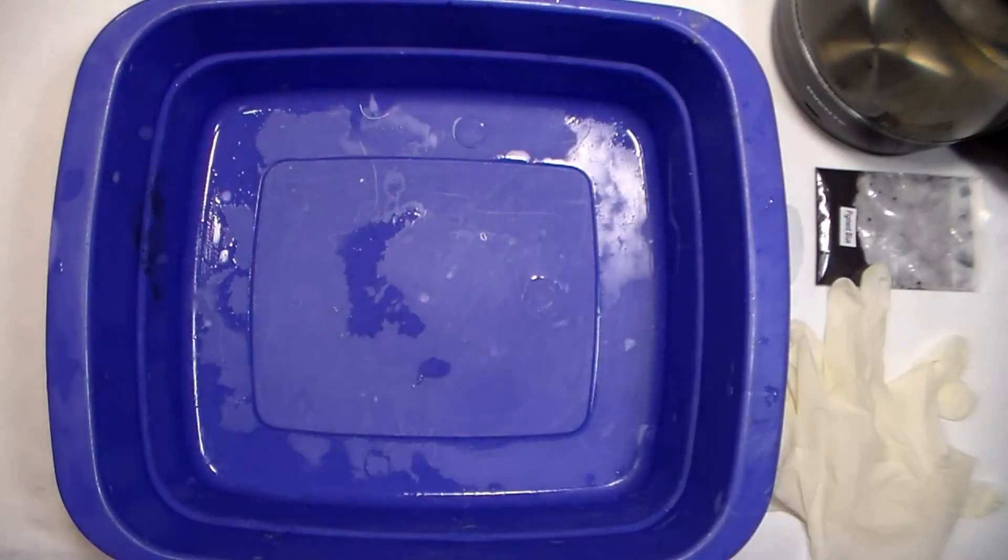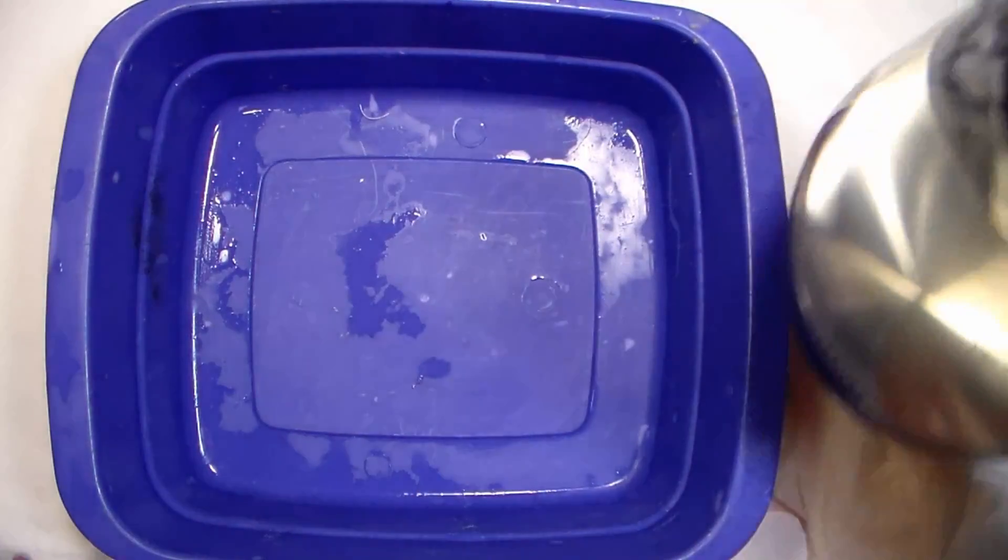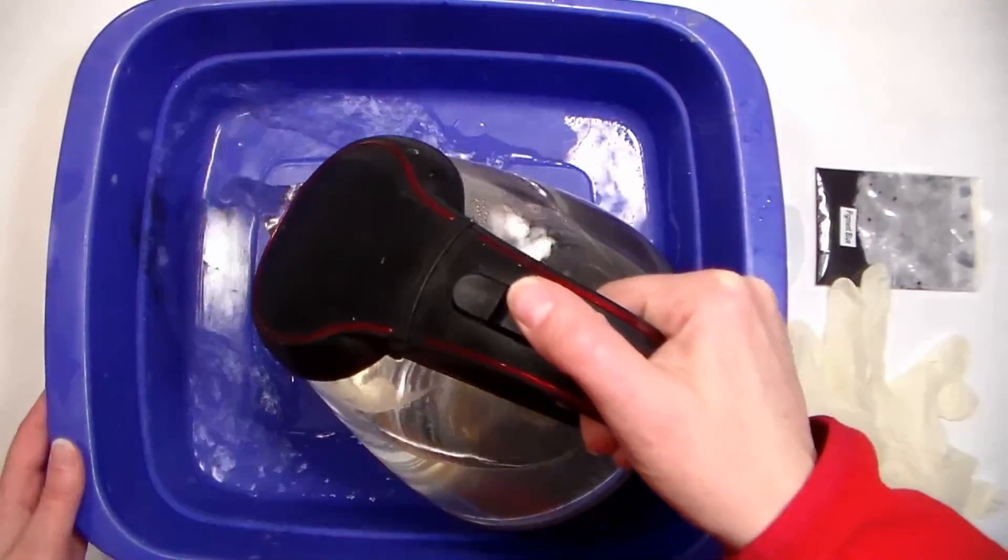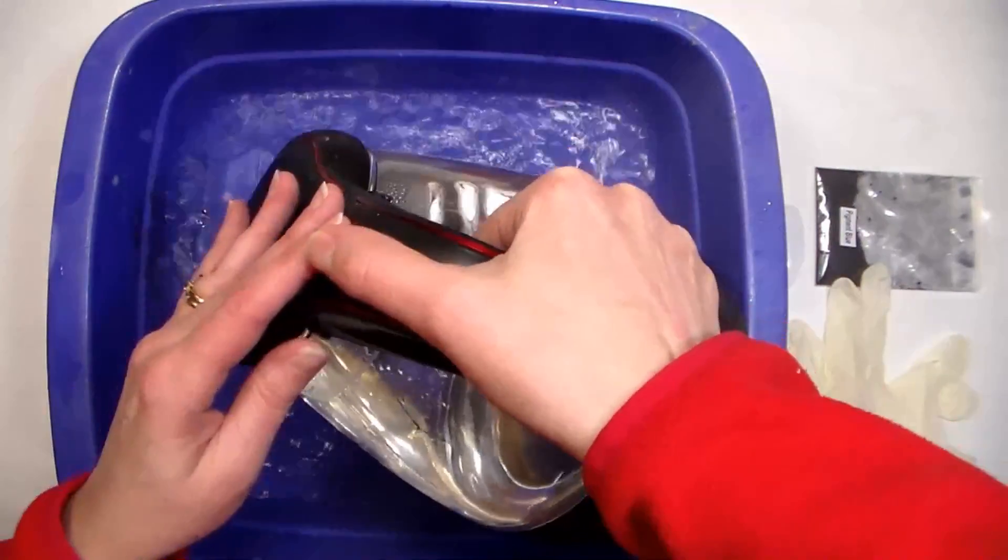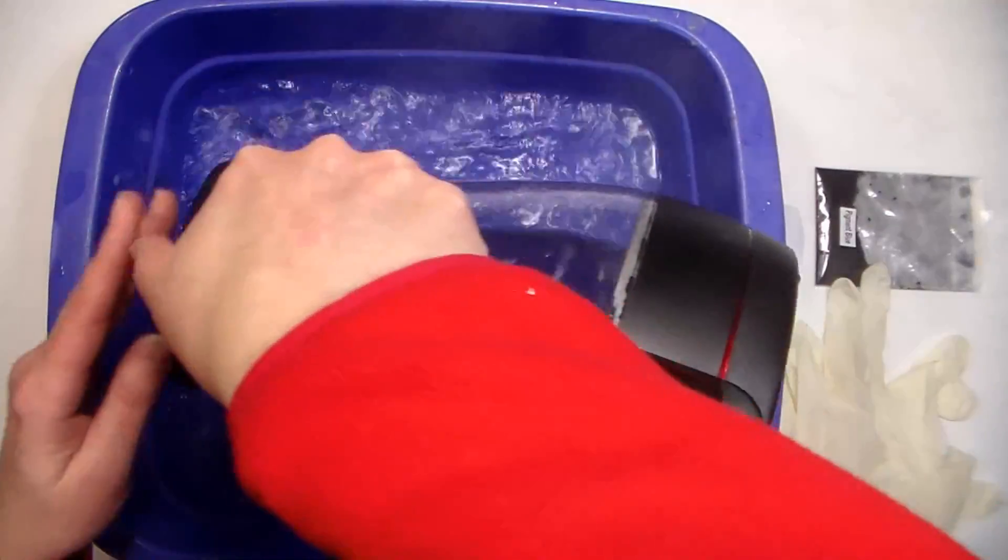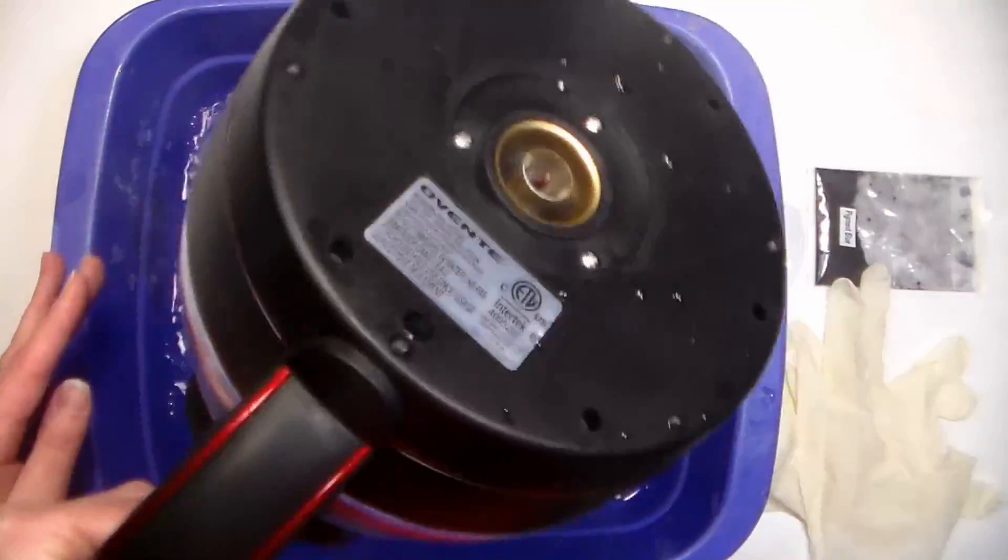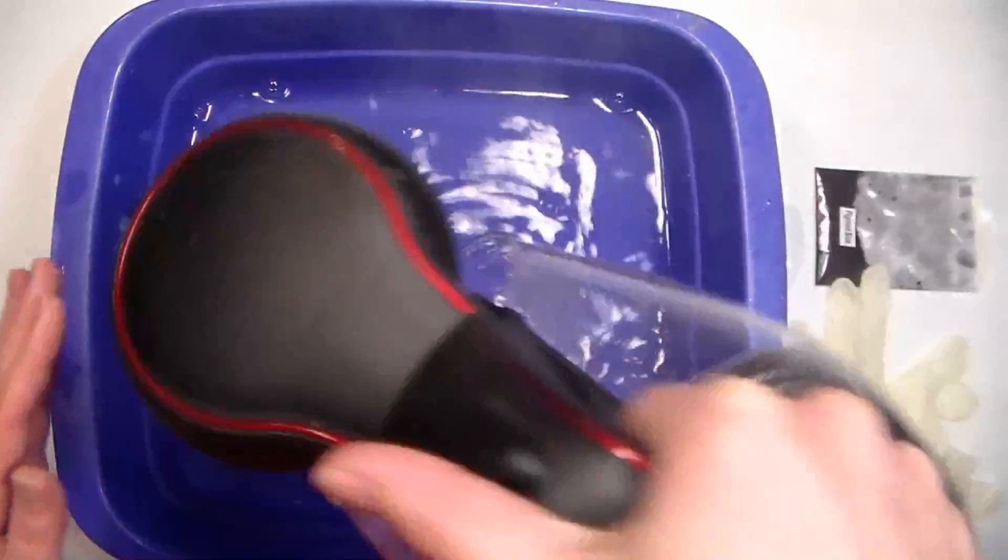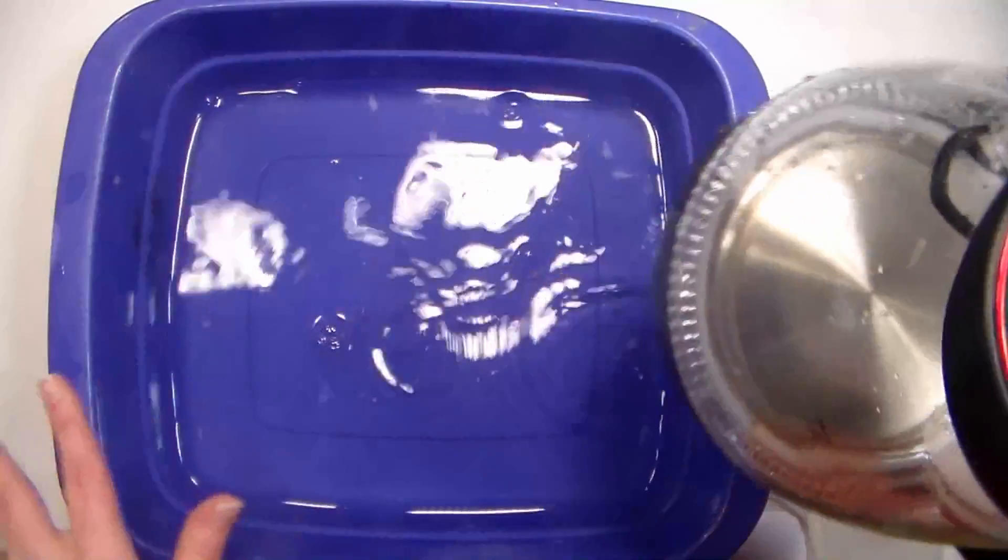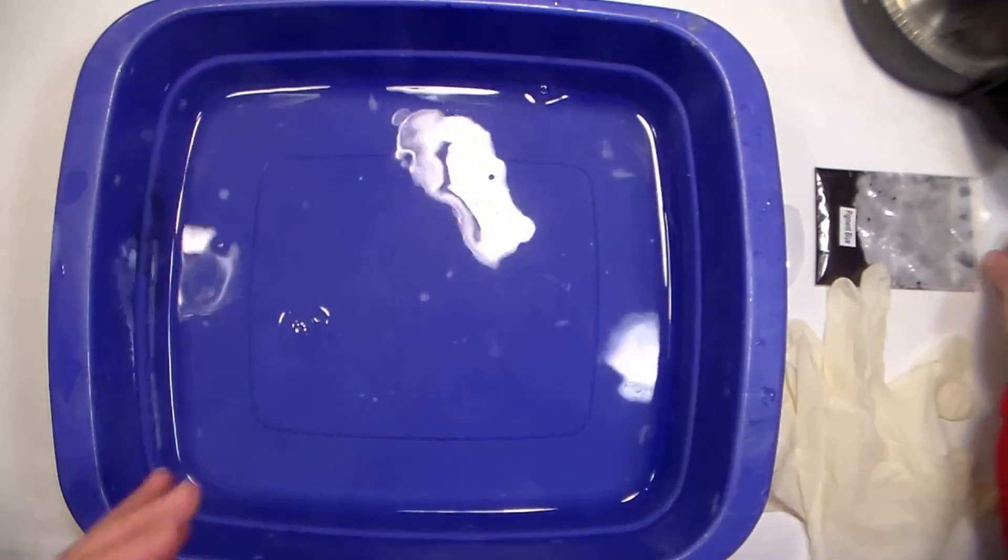So what we're going to do first is mix up the dye. I've got a half a gallon of warm water here that I'm going to pour into my bin. This is just a dish pan that I use anytime I need to dye anything. I make sure I wipe it down after and before any project just to make sure there's no residual ink or dye in there.